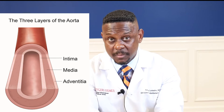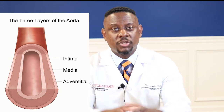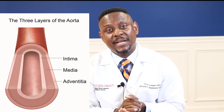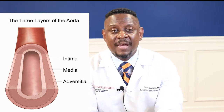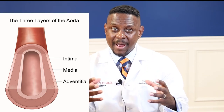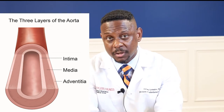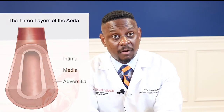Now, the aorta itself is defined by three layers. There's an innermost layer referred to as the intima — that's the smooth surface of the aorta that is in contact with blood. There's the media, which contains muscle and elastin fibers and allows the aorta to contract and expand when the heart beats. There's also the adventitia, which is the strength layer of the aorta.